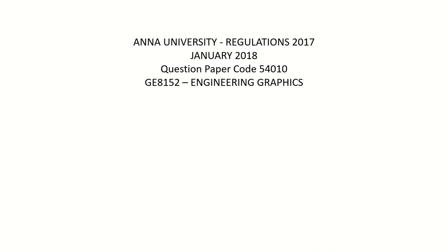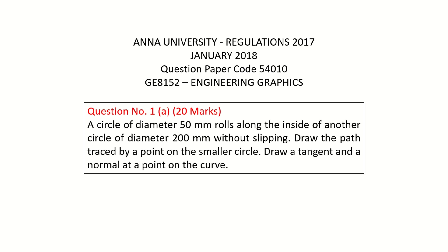The question is taken from Anna University, January 2018 question paper. The question reads: a circle of diameter 50 mm rolls along the inside of another circle of diameter 200 mm without slipping. Draw the path traced by a point on the smaller circle. Draw a tangent and a normal at a point on the curve.